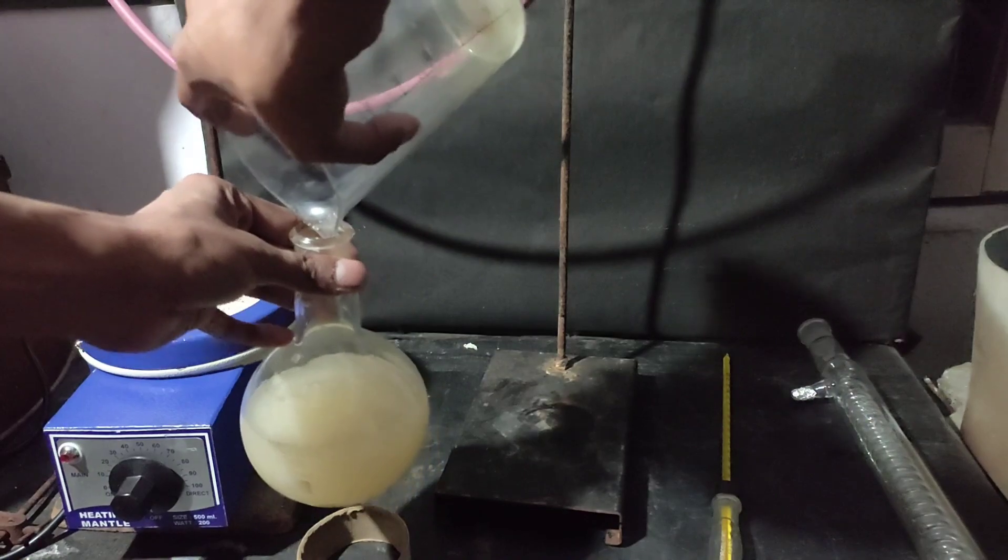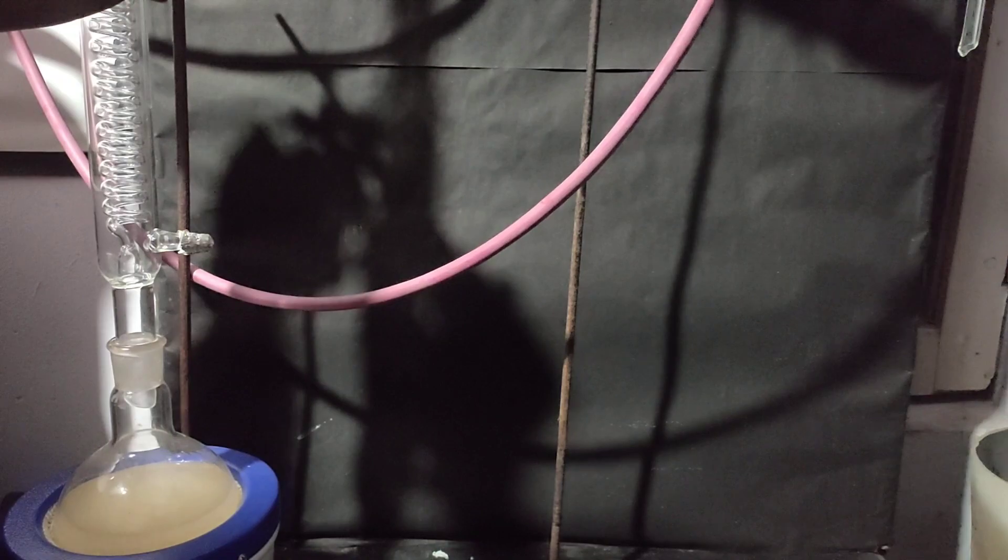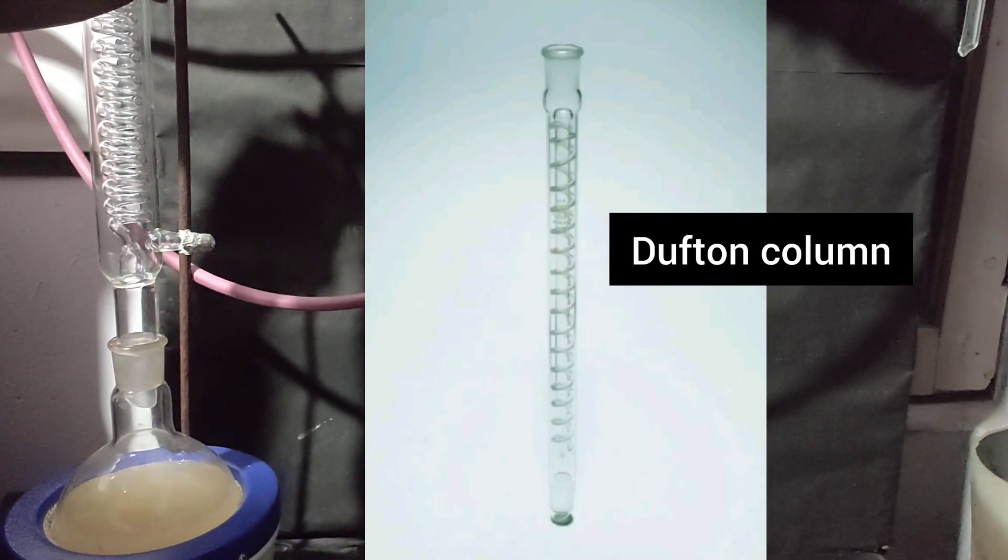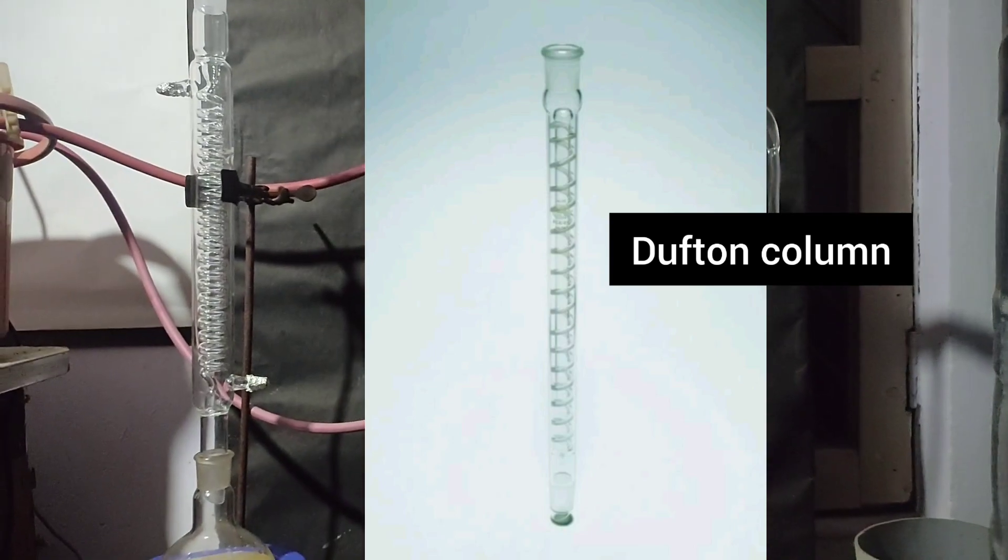The video is not over yet. Now I will show how a Graham's condenser works as a fractionating column. It is similar to the Dufton column.